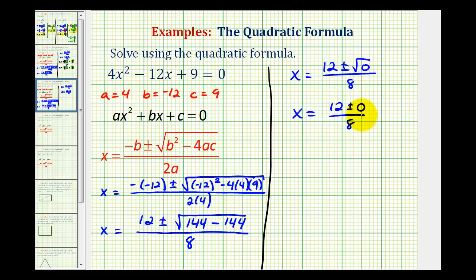Well, adding and subtracting 0 isn't going to change anything, so here we only have one solution. We have x = 12/8, which does simplify. The greatest common factor of 12 and 8 is 4, so we can divide both by 4, and our solution is x = 3/2.